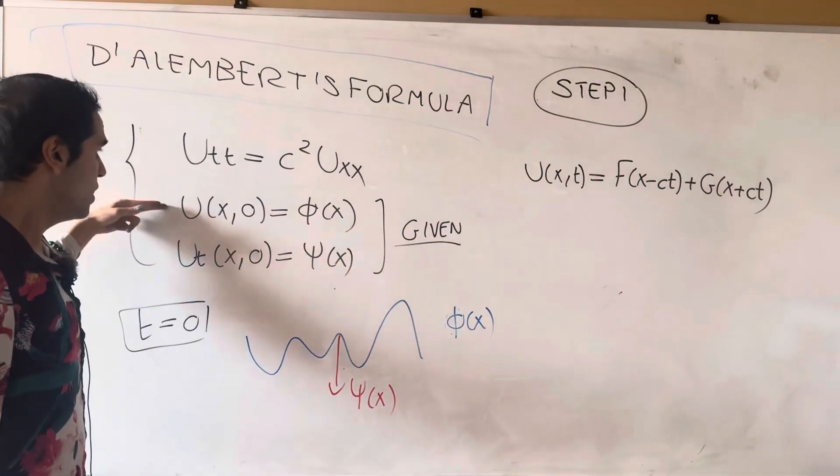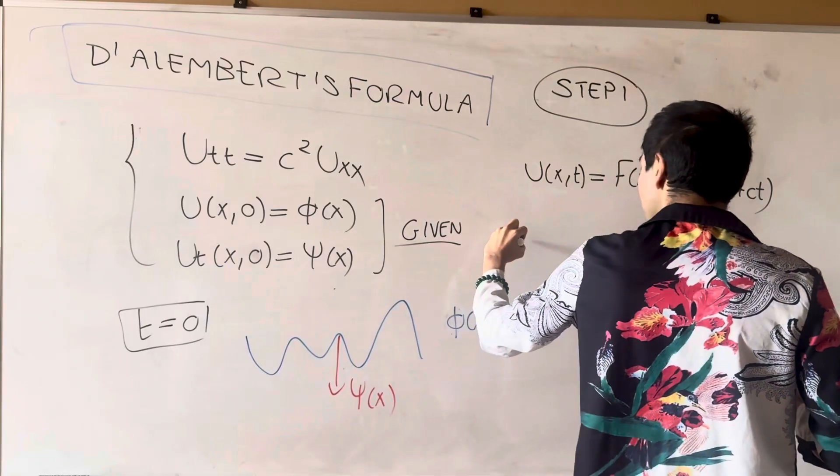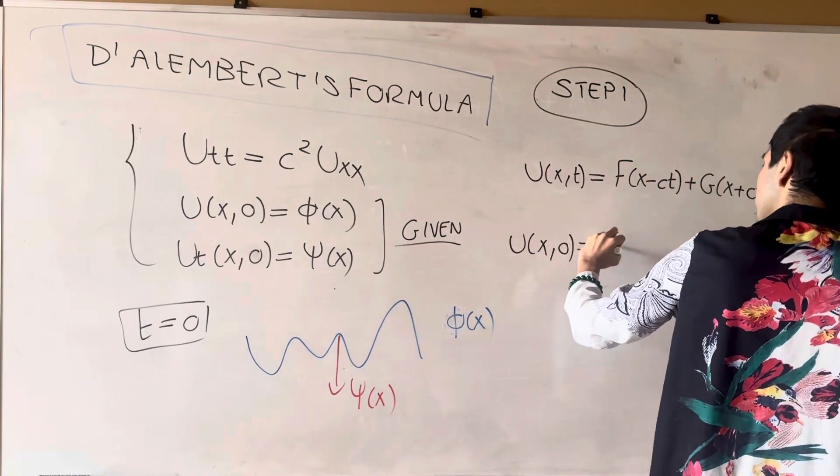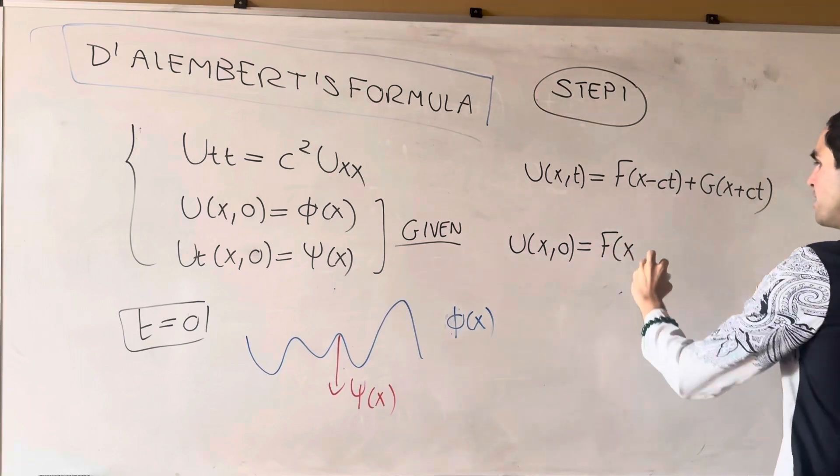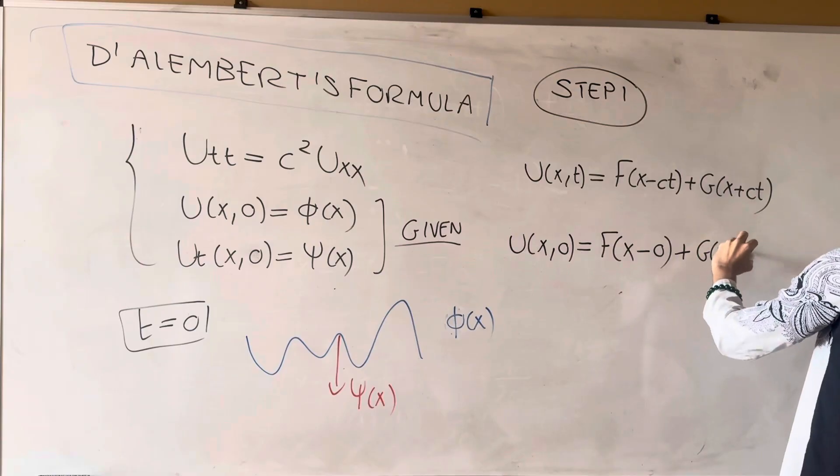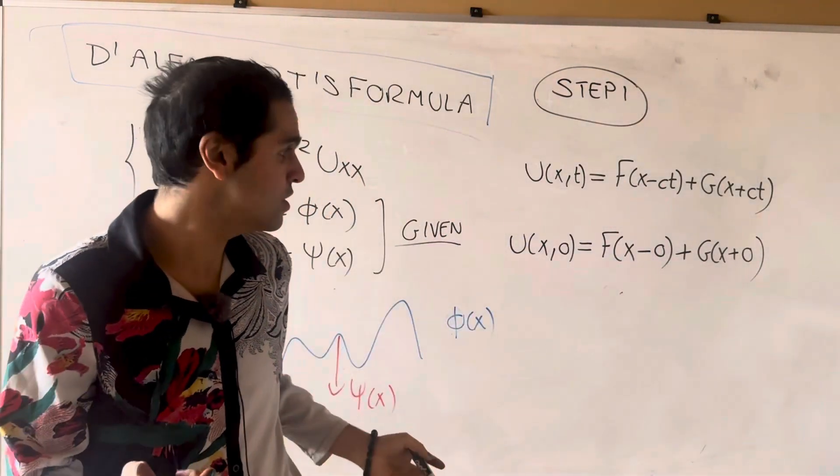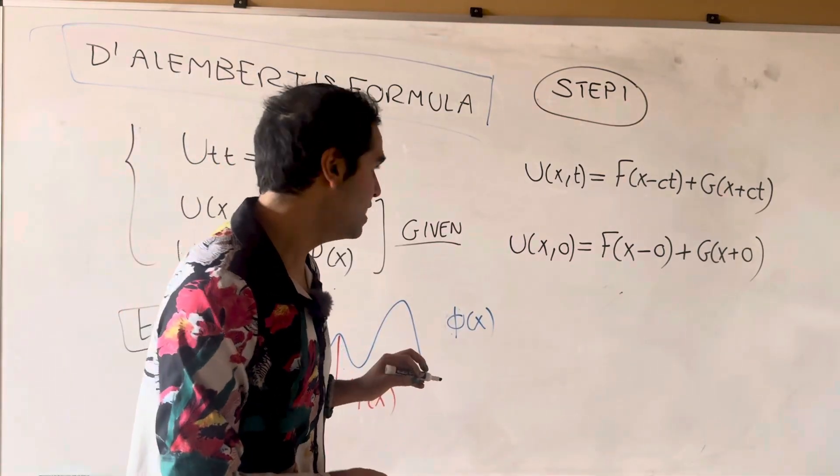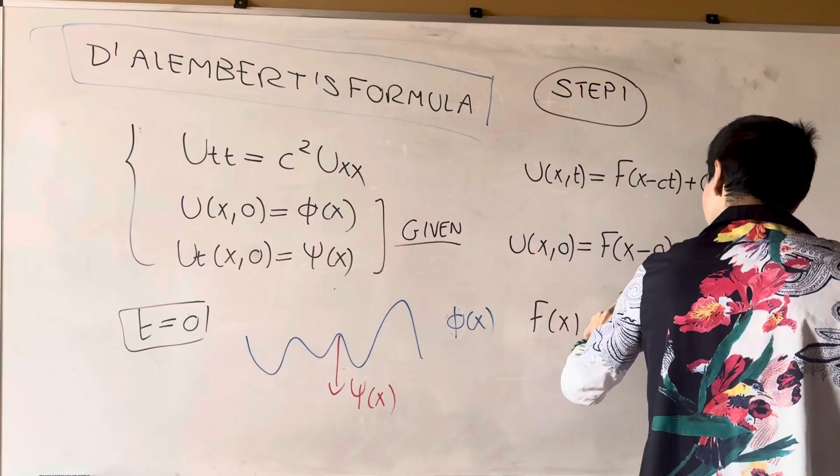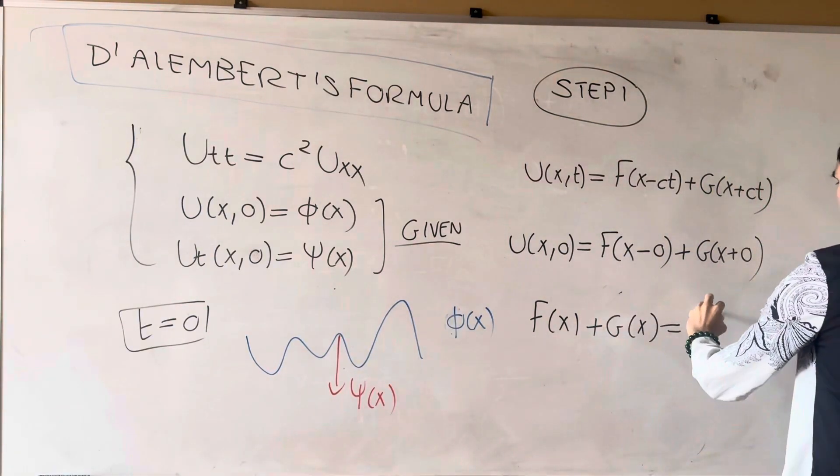So, in order to use an initial position, all you have to do is now plug in t equals zero. So u of x zero is f of x minus zero plus g of x plus zero. And that already gives us the first equation that we need, which is f of x plus g of x equals phi of x.